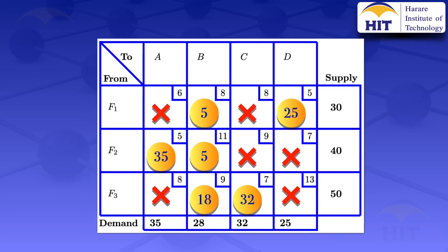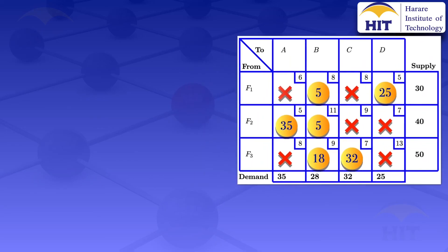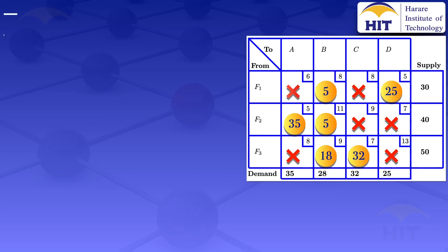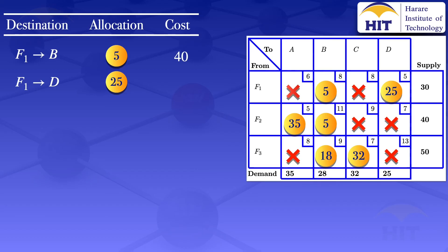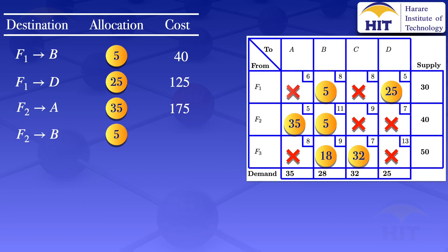Now we make an interpretation table with destination, allocation, and cost. From F1 to B: 5 units at a unit cost of 8 → cost = 5 × 8 = 40. From F1 to D: 25 units at a unit cost of 5 → cost = 25 × 5 = 125. From F2 to A: 35 units at a unit cost of 5 → cost = 35 × 5 = 175. From F2 to B: 5 units at a unit cost of 11 → cost = 5 × 11 = 55.